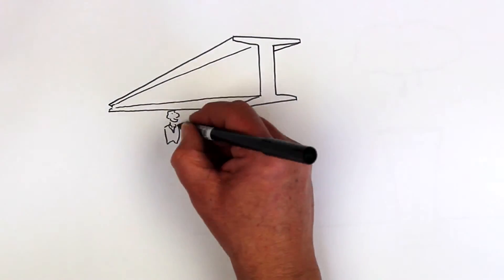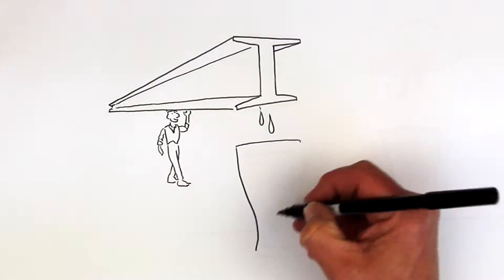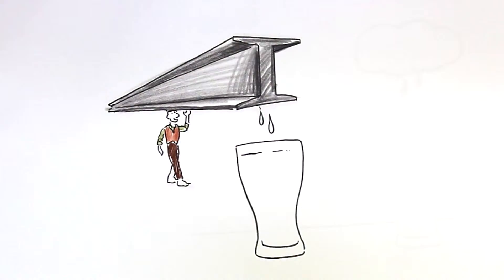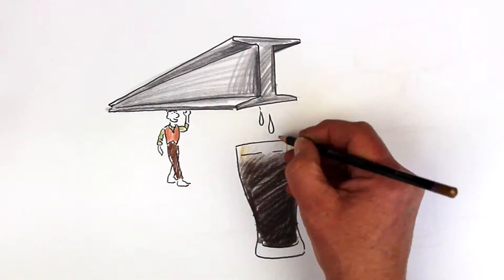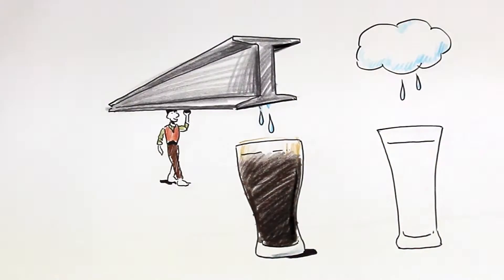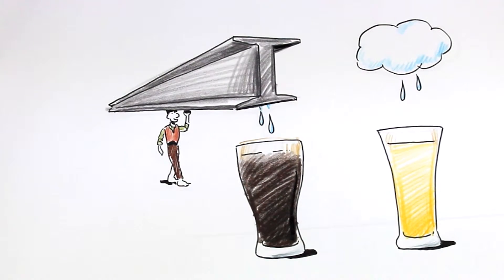Water also contributes to the flavour characteristics of the beer, and what type of water you use can make a huge difference. For example, brewers use water that's rich in minerals when creating fortifying stouts like Guinness, but softer or mineral-free water when brewing crisp dry lagers like Toohey's Extra Dry.